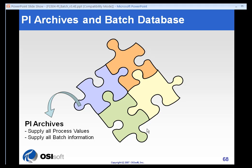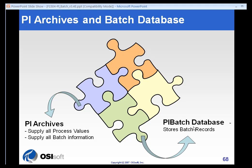This diagram illustrates how tightly woven all of the systems and architectures are with one another in the PyBatch database with regard to the PySystem. You can see that one piece represents our PyArchive, which supplies all process values and is where we store event frame batch information. The PyBatch database stores batch records — so the PyArchive stores specific information about each batch, whereas the PyBatch database stores the record itself.